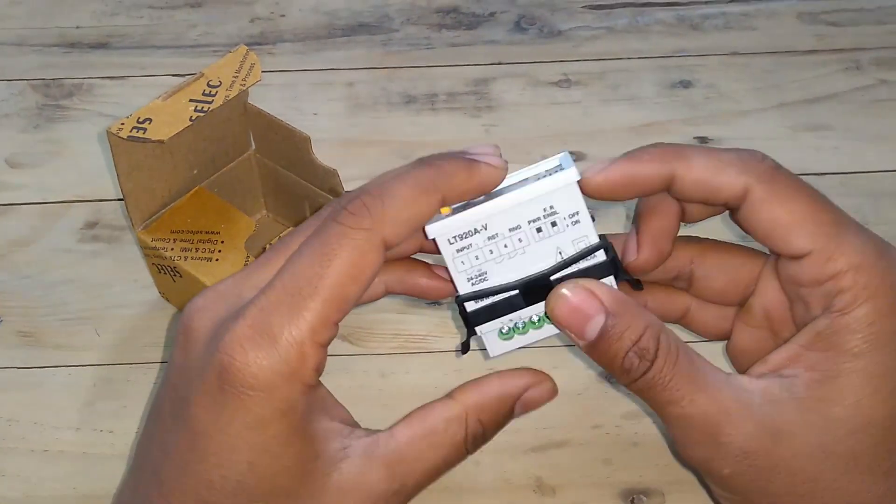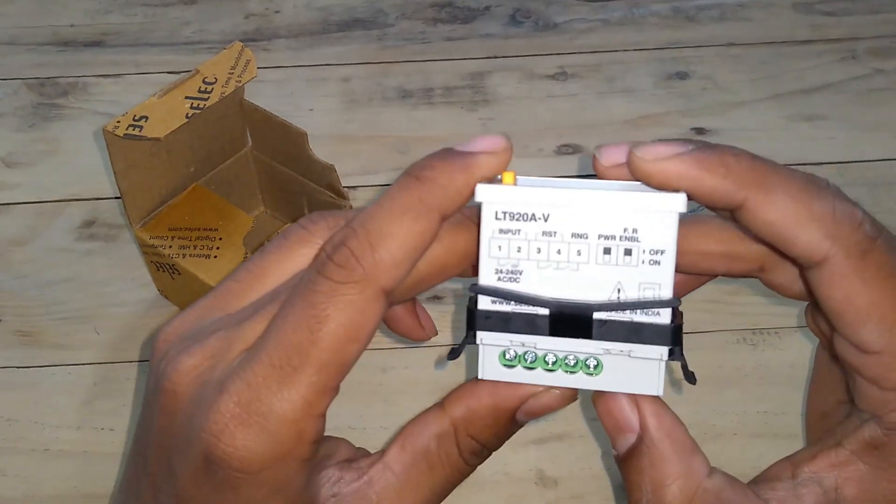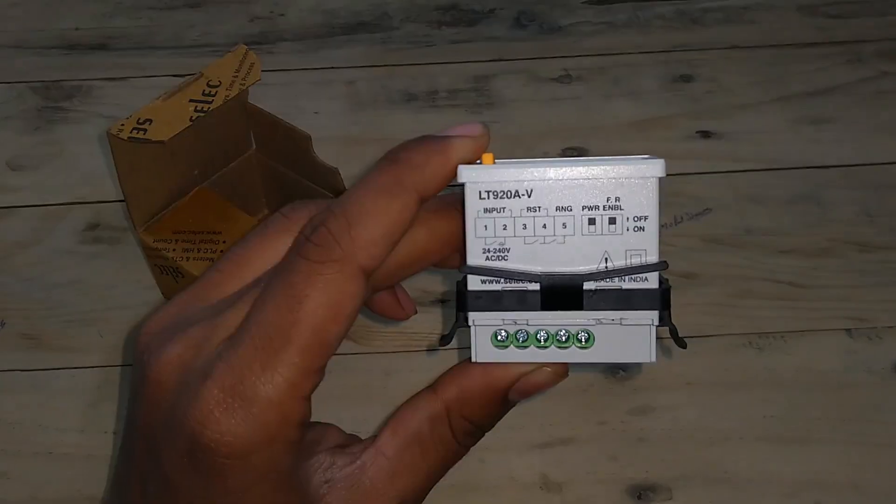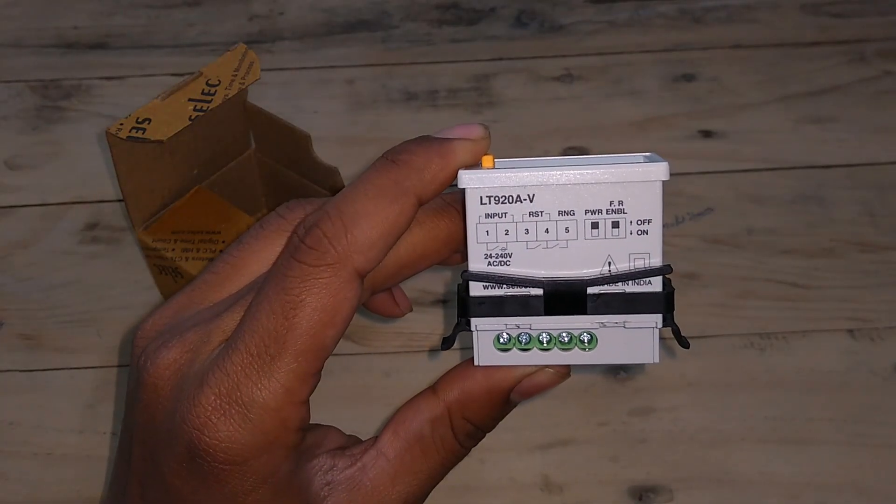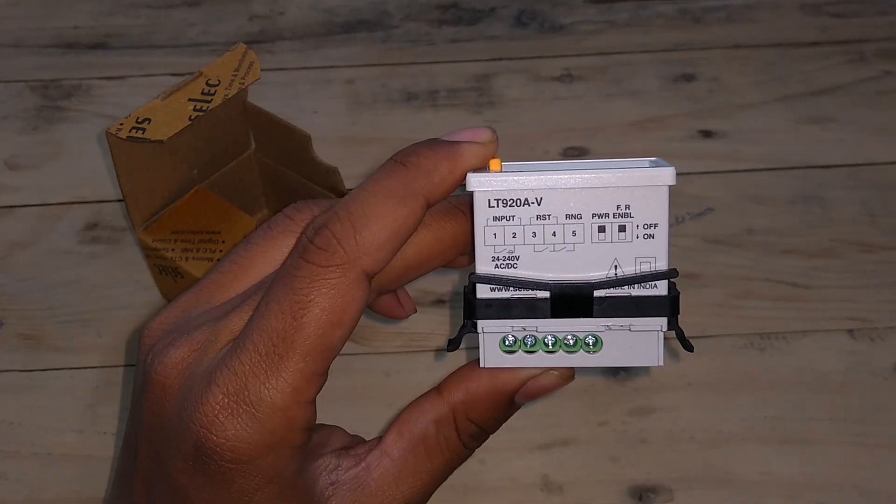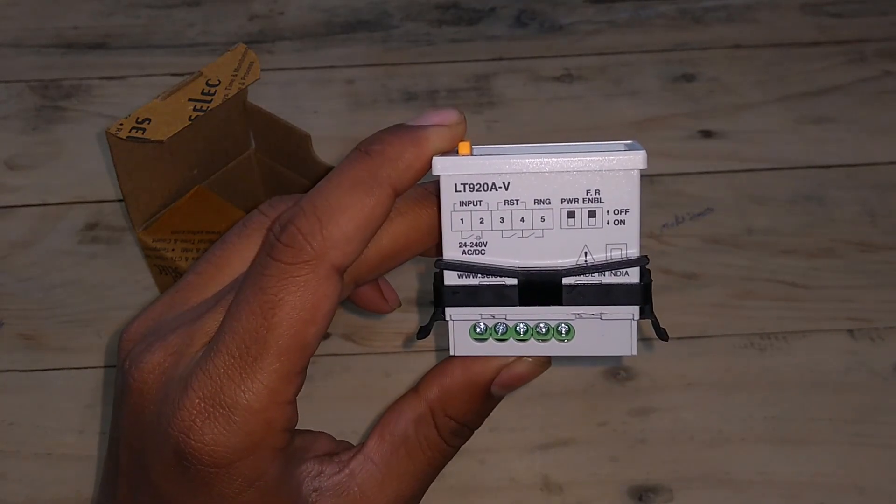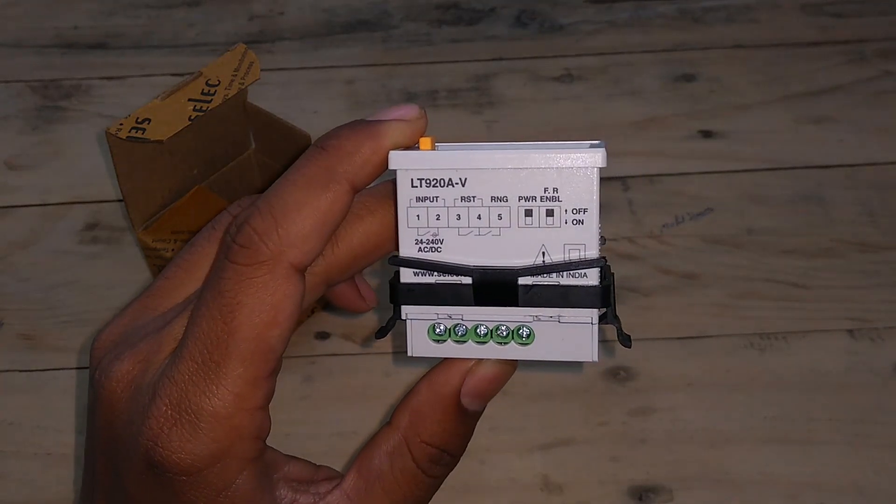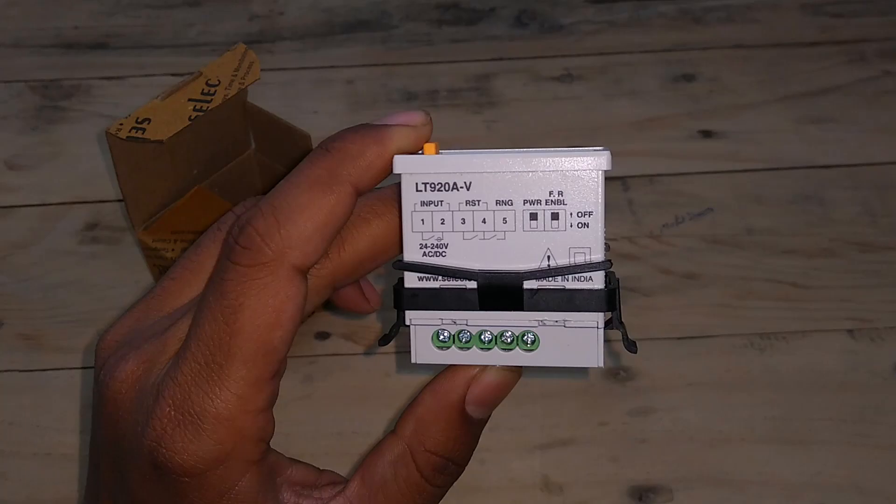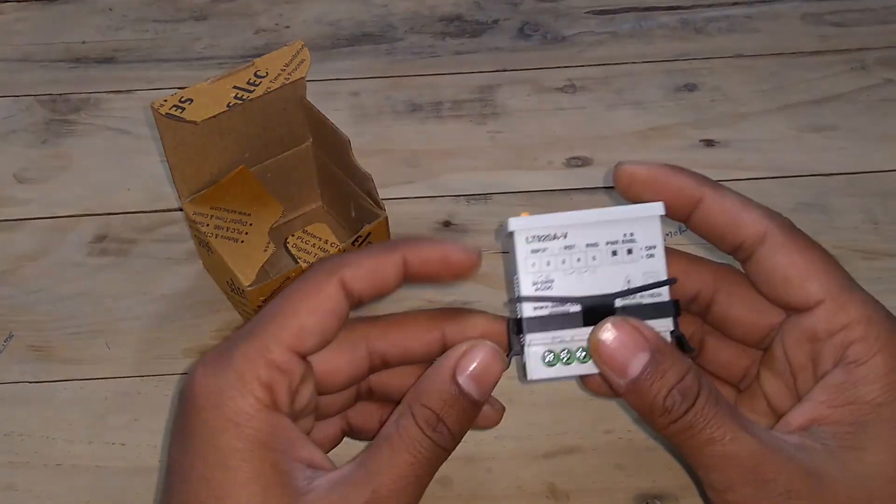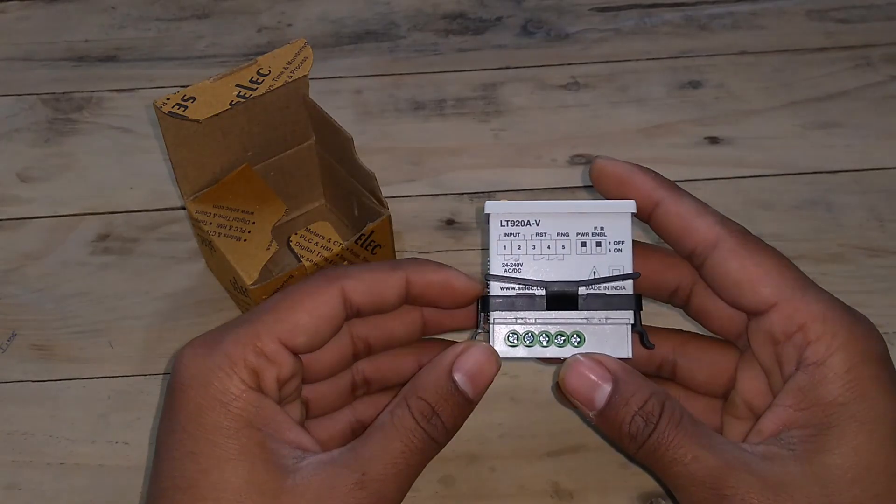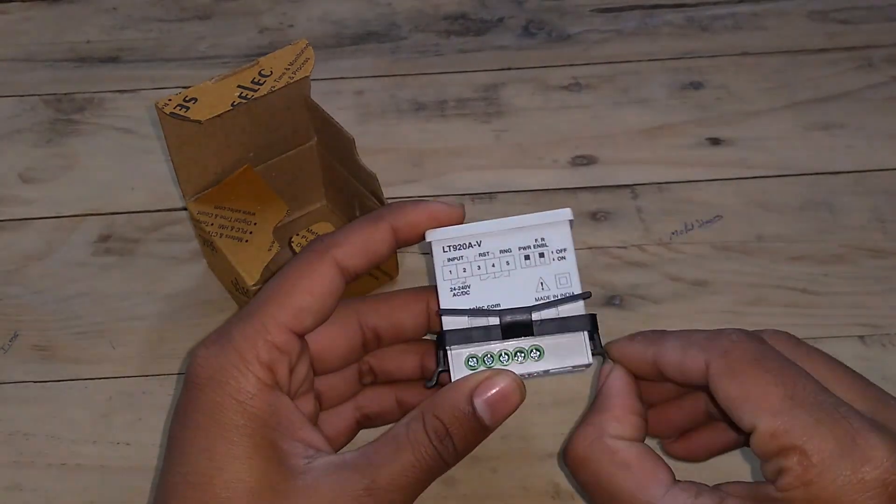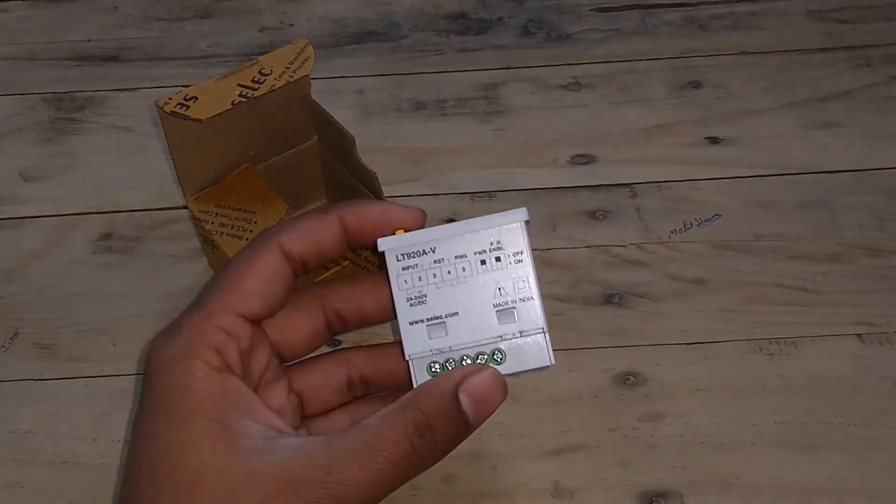As you can see, there are some input pins on it. There are five pins by connectors. One and two is for input, three and four is for reset, and five is for range. You can provide 24 volt to 240 volt AC or DC, both powers to the input.